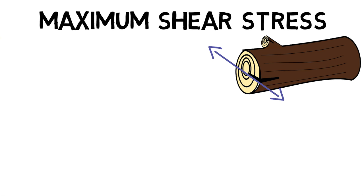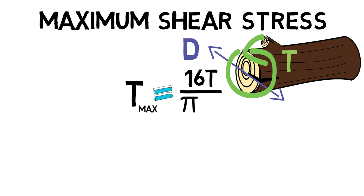The maximum shear stress value for a solid shaft of diameter D with torque T applied to it is given by T max equals 16T upon pi D cubed.